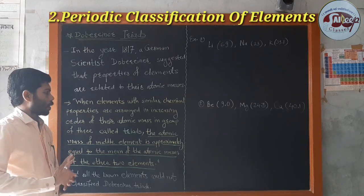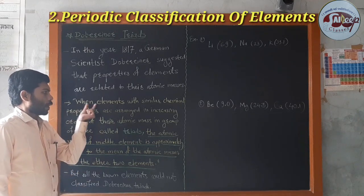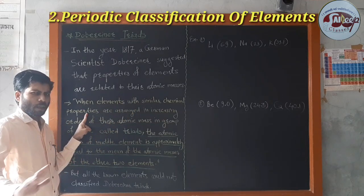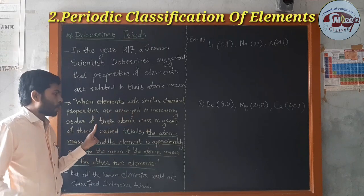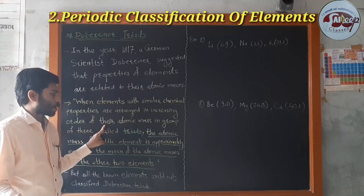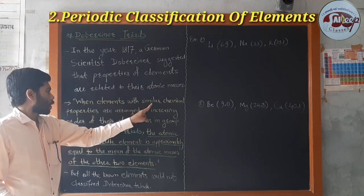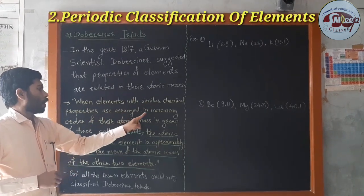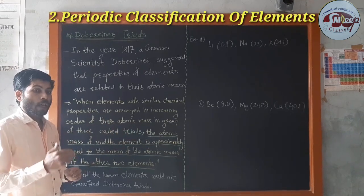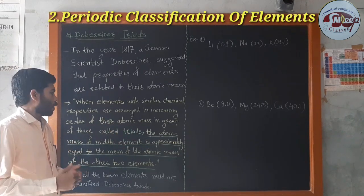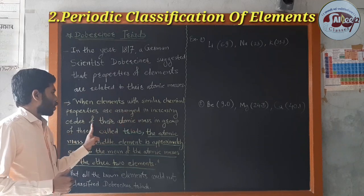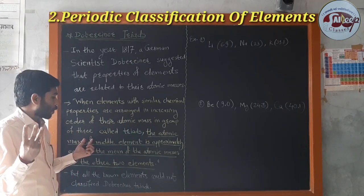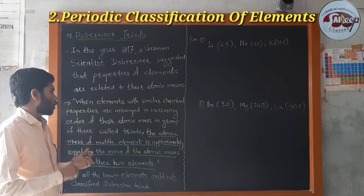Let us revise the definition. When elements with similar chemical properties are aligned in increasing order of their atomic masses, in a group of three — how many elements? Three elements — they are called Triads.